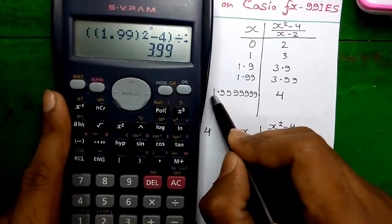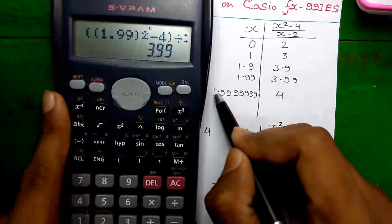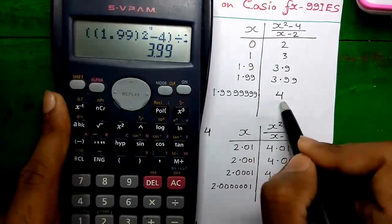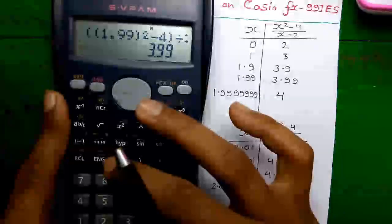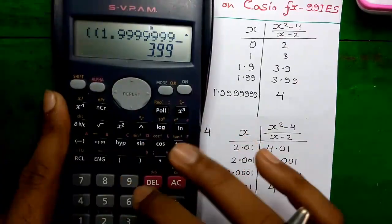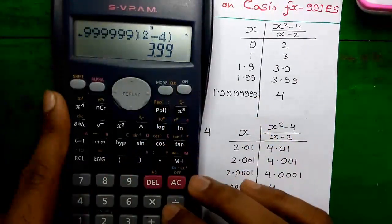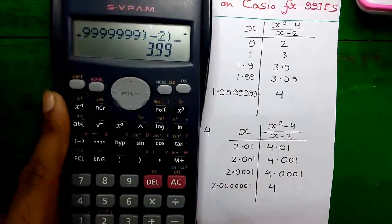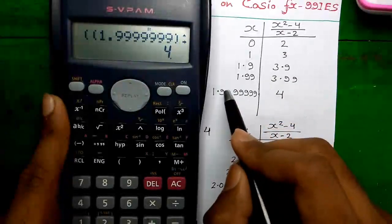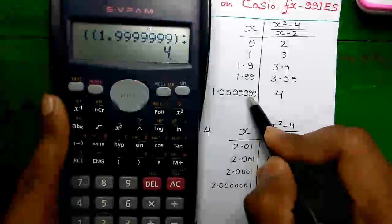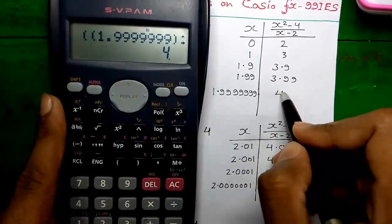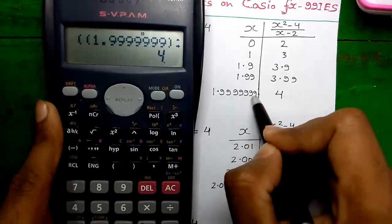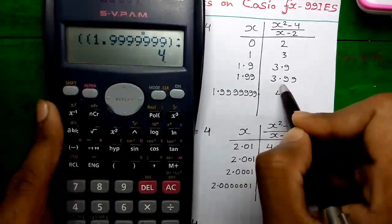Now go to extremely close to 2, by taking 1.9999999 (seven nines). Let's find out the value of the limit — we have to reform the expression again. As you can see, if we go extremely close to 2, the value of the limit will be 4. So we can approximately say that for the value very close to 2 from below, the value of the limit is 4.